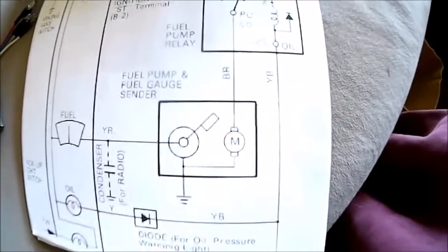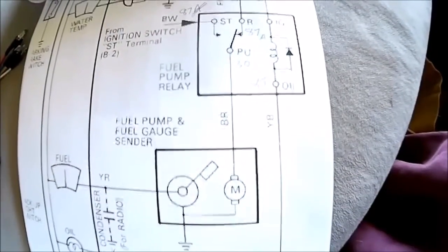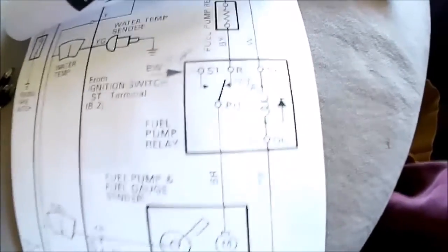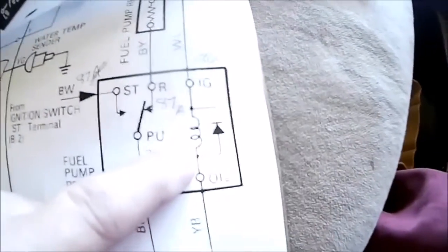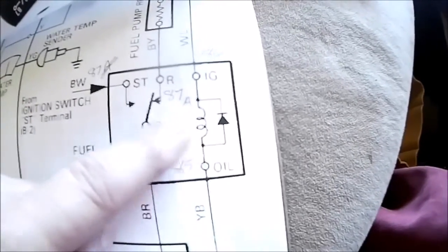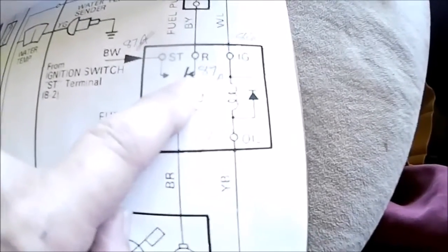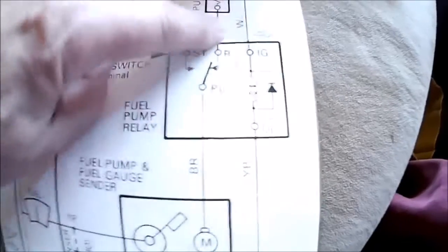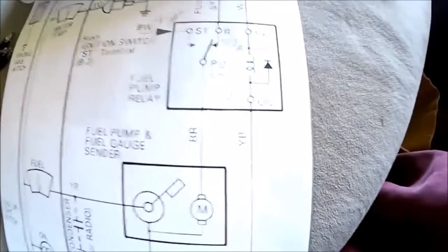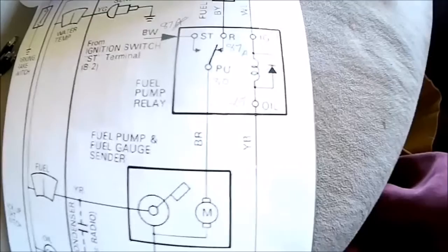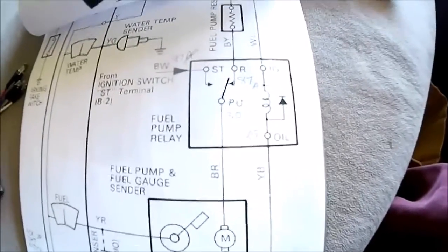The fuel pump is pumping up to the carburetor. Once it starts running, you get four or five PSI of oil pressure and this switch opens, so this de-energizes and flops back over to run. Now you have run power coming through to the fuel pump. Makes sense now, but it took me days to figure this out.